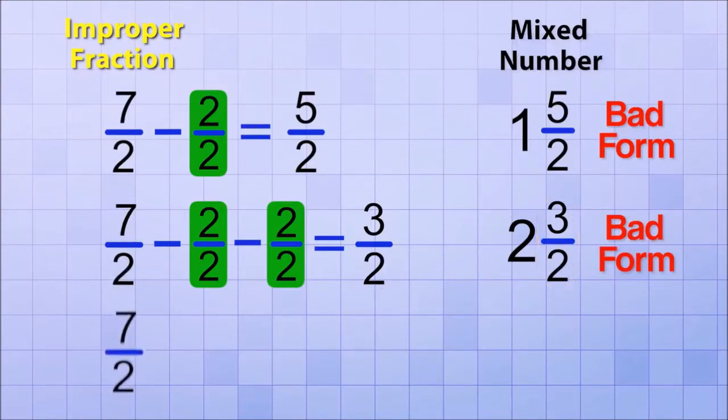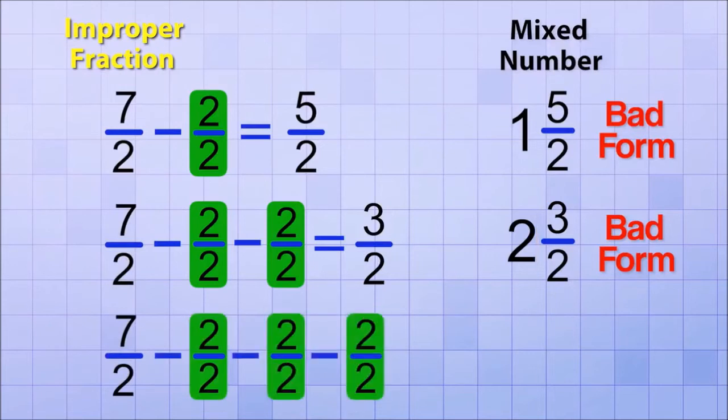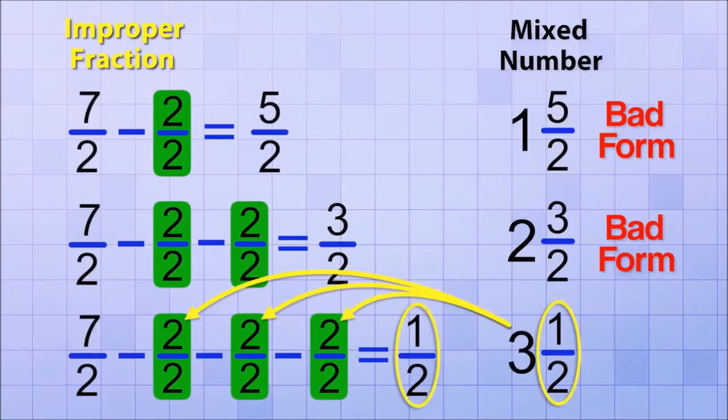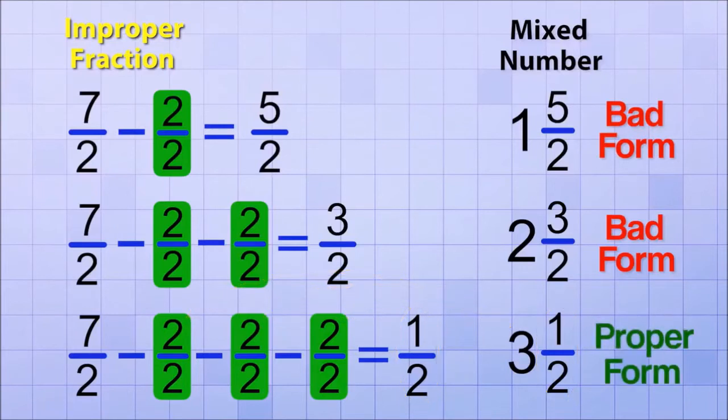So let's try again, subtracting three whole fractions this time. 7 over 2 minus 2 over 2 minus 2 over 2 minus 2 over 2 equals 1 half. That means we could write 7 over 2 as the mixed number 3 and 1 half since we subtracted out three whole fractions and had 1 half left over. And that's the proper mixed number form of 7 over 2 because it's a whole number and a proper fraction, so there's no more whole fractions that we could simplify out.